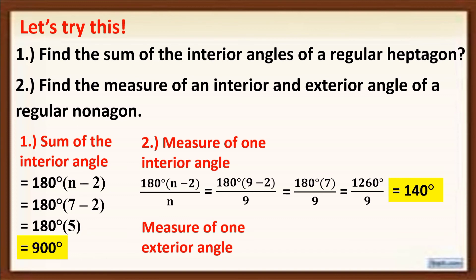Now, to get the measure of one exterior angle of a regular nonagon, we use the formula 360 degrees over n, where n is the number of sides. The value of n here is 9 because a nonagon has 9 sides. So 360 degrees divided by 9 gives 40 degrees. Therefore, the measure of one exterior angle of a regular nonagon is 40 degrees.